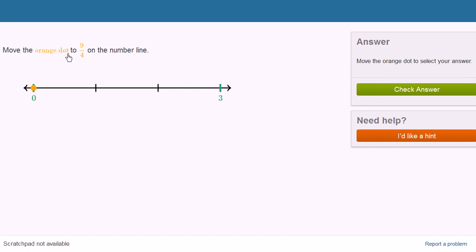Move the orange dot to 9 fourths on the number line. Let's think about this number line right here. This is 0, this is 3, so this must be 1 and 2. We need to go to 9 fourths.